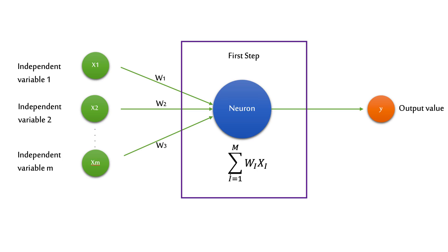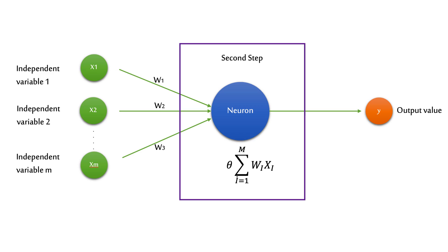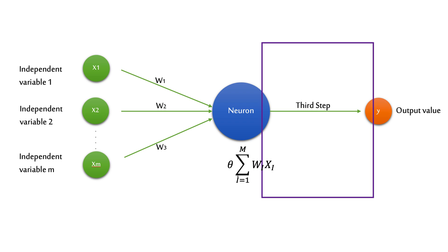The first step that happens in the neuron when receiving the signal is the summation of all the input values multiplied by the weight — straightforward. The second step is the activation function, which we will discuss in the next video, and it is applied to the weighted sum. Based on this, the neuron decides if it needs to pass on the signal or not. In step three, the neuron passes the signal to the next neuron down the line. This whole process is repeated over the neural network thousands of times during training, depending on how many neurons and synapses are in the network.